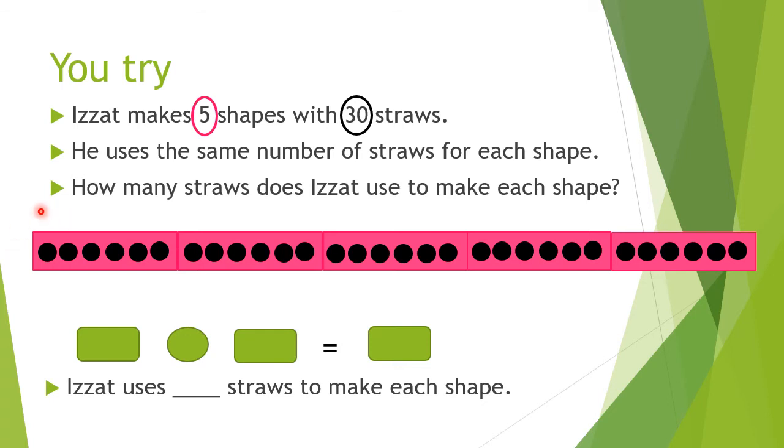Now we choose one box. So teacher chooses the first box. And then we count how many dots are there inside: 1, 2, 3, 4, 5, 6. So there are 6 dots in one box. So the answer is 6.